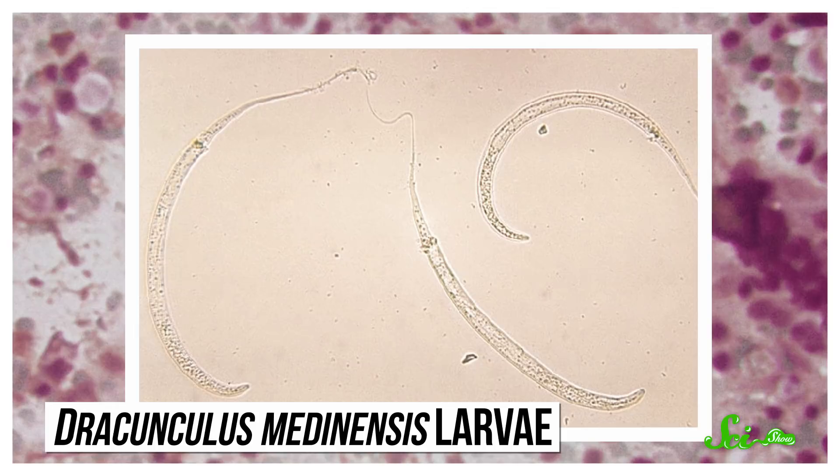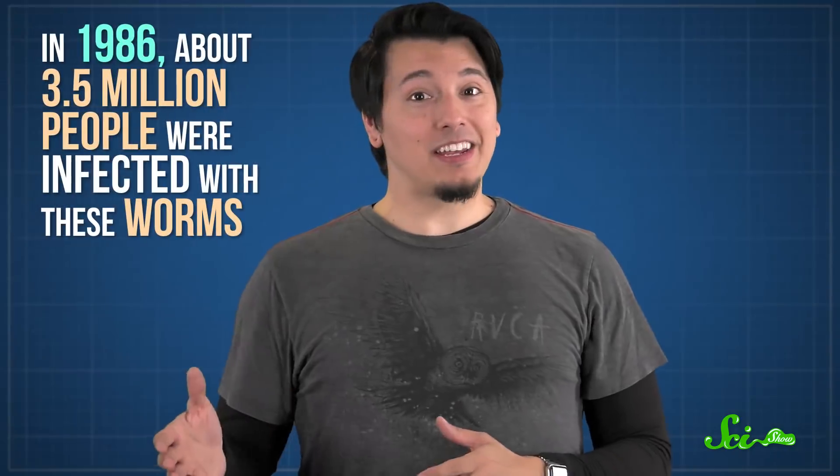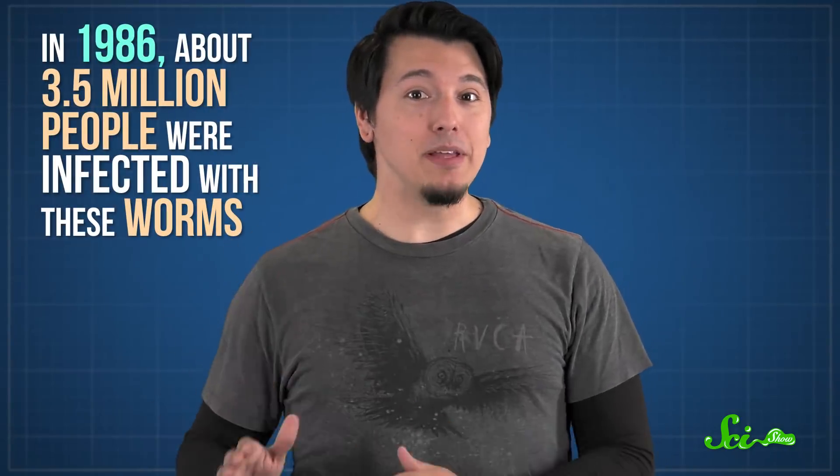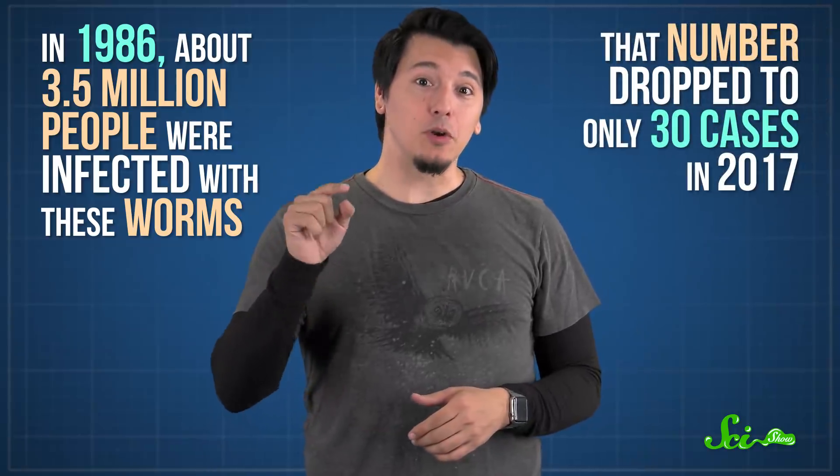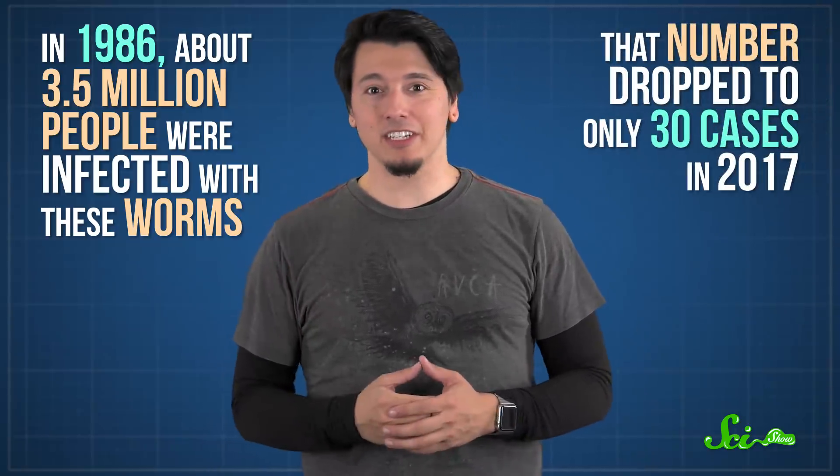It's caused by a parasitic worm that grows inside a human host. And by grows, I mean an adult female can be about a meter long inside you. Back in 1986, about three and a half million people were infected with these worms. But that number dropped to only 30 cases in 2017.